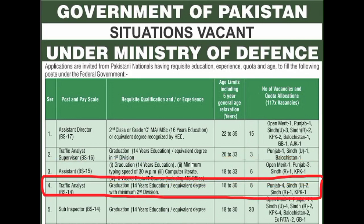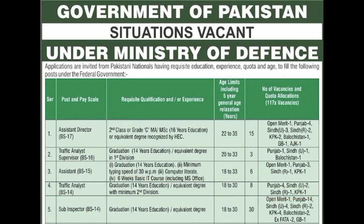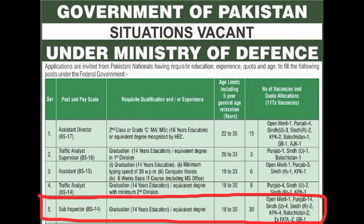Traffic Analyst, scale 14 — graduation required, 14 years education, equivalent degree with minimum second division। Age limit 18 to 30। 8 posts: Punjab की 4, Sindh Urban की 2, Sindh Rural की 1, KPK की 1। Sub-Inspector, scale 14 — graduation, 14 years education, equivalent degree। Age limit 18 to 30 years। कुल 30 seats हैं।